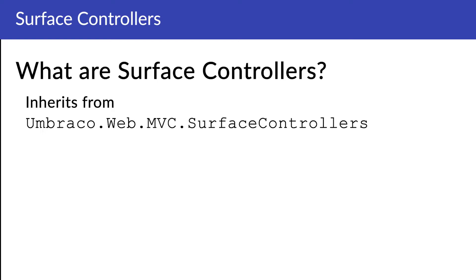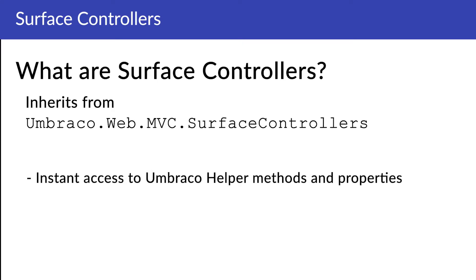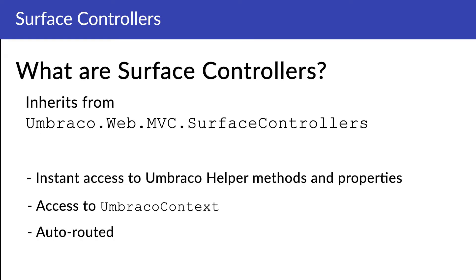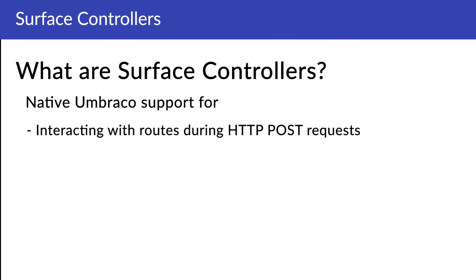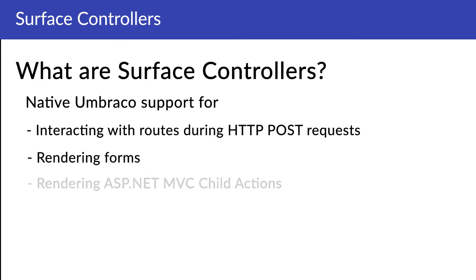In your surface controller, you will have instant access to Umbraco helper methods and properties. You will have access to Umbraco context. On top of that, surface controllers are auto-routed, which means you will not need to set up any custom routes to start working with them. A few other bonuses: it will provide native Umbraco support for interacting with routes during HTTP post requests, for rendering forms, and for rendering ASP.NET MVC child actions.